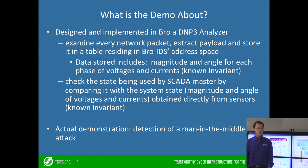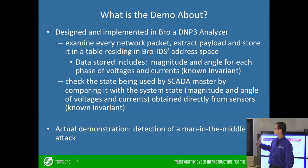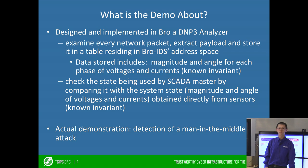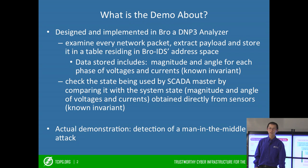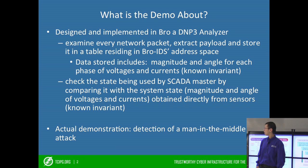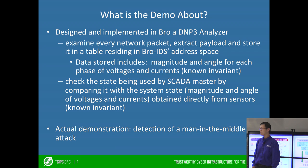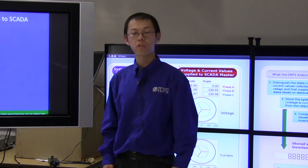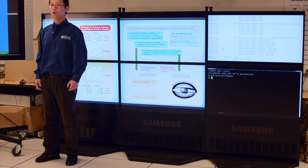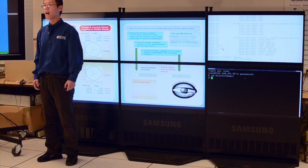In this slide, I'll briefly describe what this demo is about. We designed and implemented in Bro a DNP3 analyzer. It will examine every network packet, extract the payload, and store it in the table residing in the Bro ID address space. The data extracted includes the magnitude and angle of each phase of the voltage and current. Then we check the state being used by the SCADA master by comparing it with the system state obtained directly from the sensor. The actual demonstration will be the detection of a man-in-the-middle attack. SCADA systems must be well protected from cyber attacks, but most current IDS does not support it very well. So we propose to adapt the specification-based IDS in this environment.